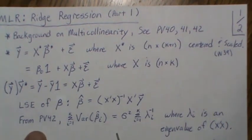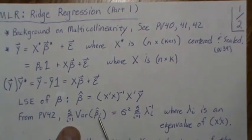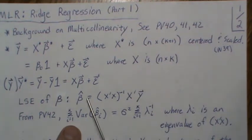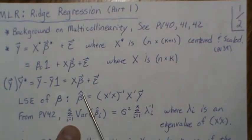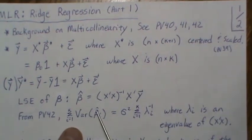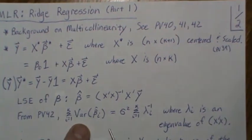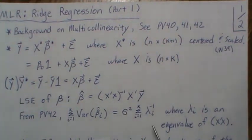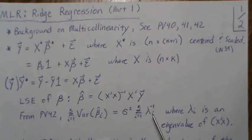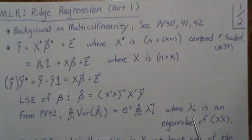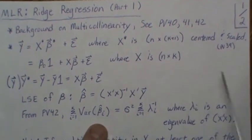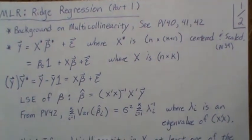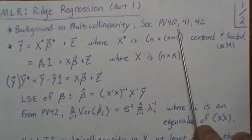From previous video 42 we looked at the sum of the variances of the components of beta. Beta is a k by 1 vector, and each component has an associated variance. We sum them up, and we've shown that it equals sigma-squared times the sum of 1 over lambda-i, where lambda-i are the eigenvalues of X-transpose X. A lot of this comes from the background videos with much more detail there.